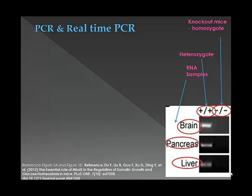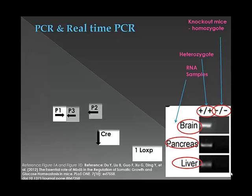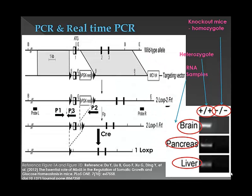Additionally, the genotypes of these mice were confirmed by PCR, which enabled them to work out the genotypes of all mice. The PCR primers used for genotyping are indicated by the arrows P1, P2, and P3.